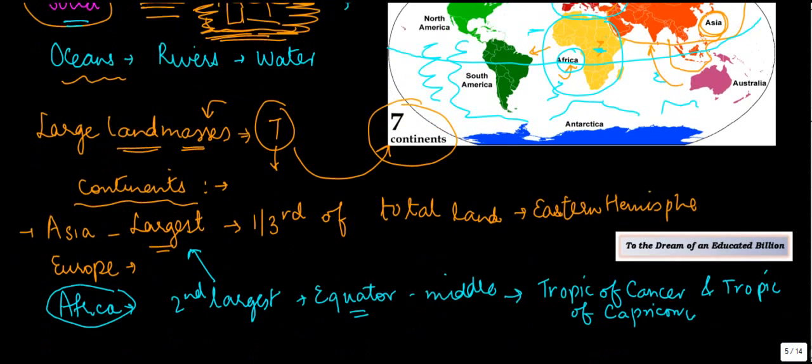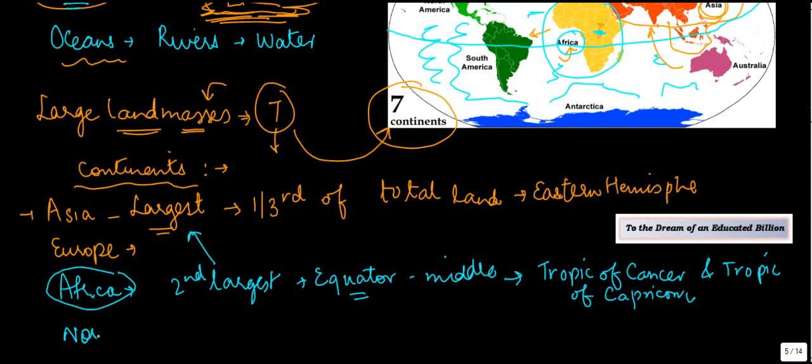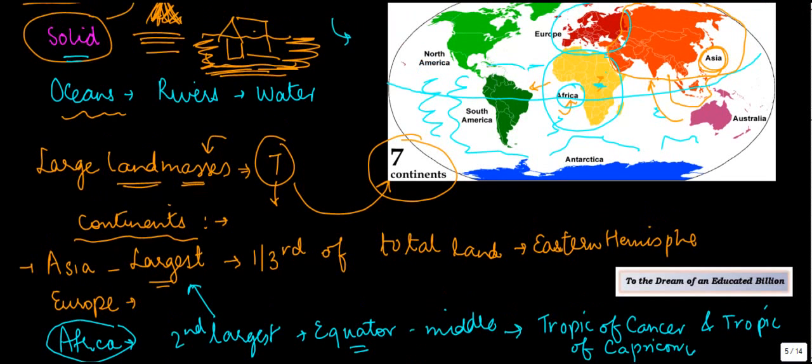And then you have other continents, which is North America and South America. So if we go back to this particular thing, here we are with South America and here is North America. And you have Australia, which is the smallest continent.